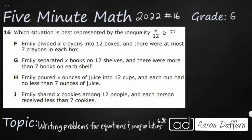So we need to find a situation best represented by this inequality: x over 12 is greater than or equal to 7. We've got Emily doing some stuff with books and crayons and juice and cookies, and all of them include 12 and a 7. So we're not going to be able to easily eliminate one just by the numbers — they're all going to include 12, 7, and x. Let's get cracking.